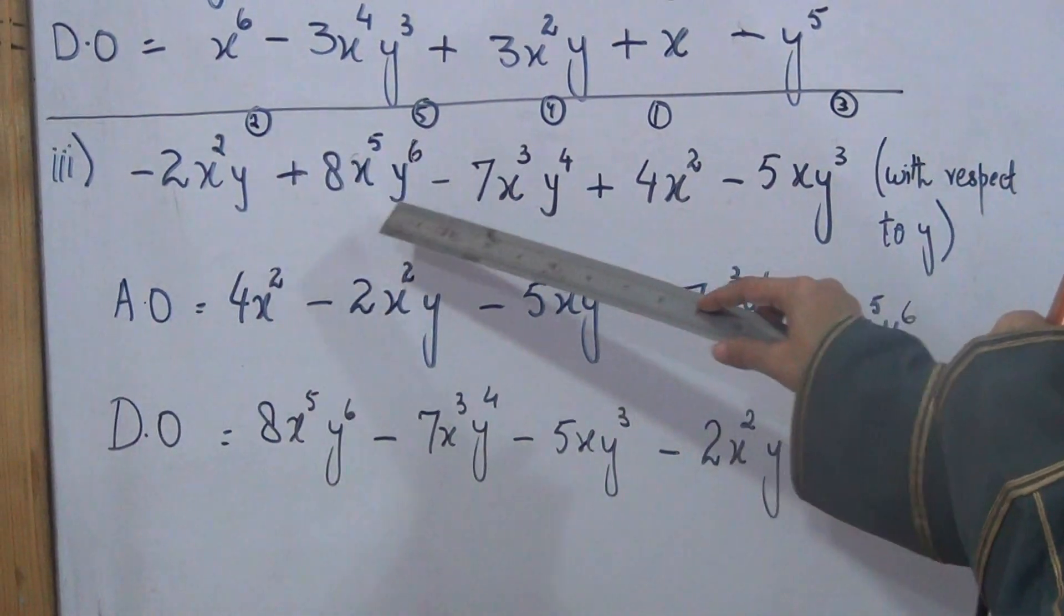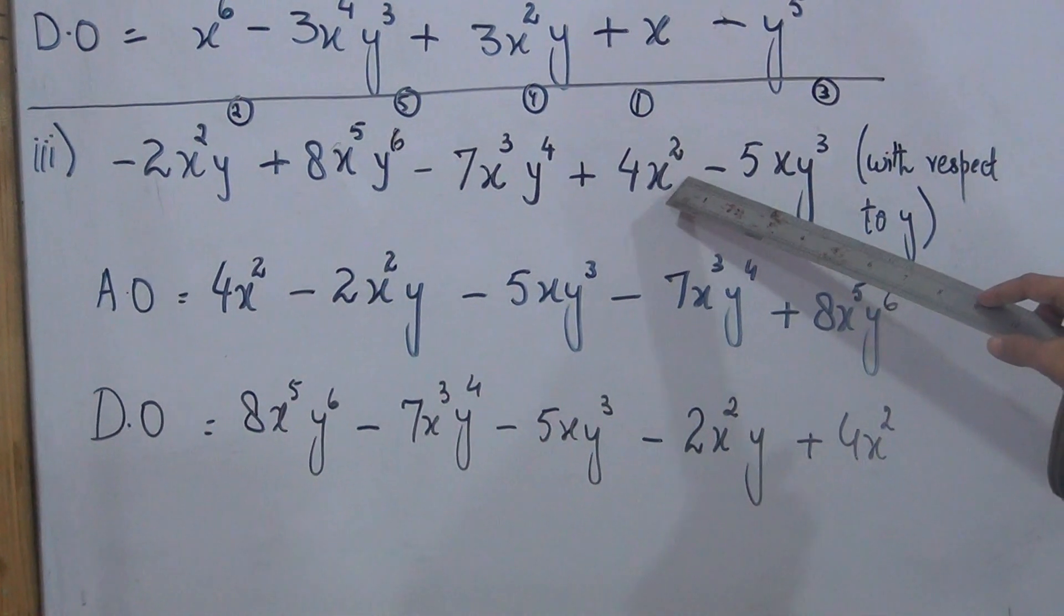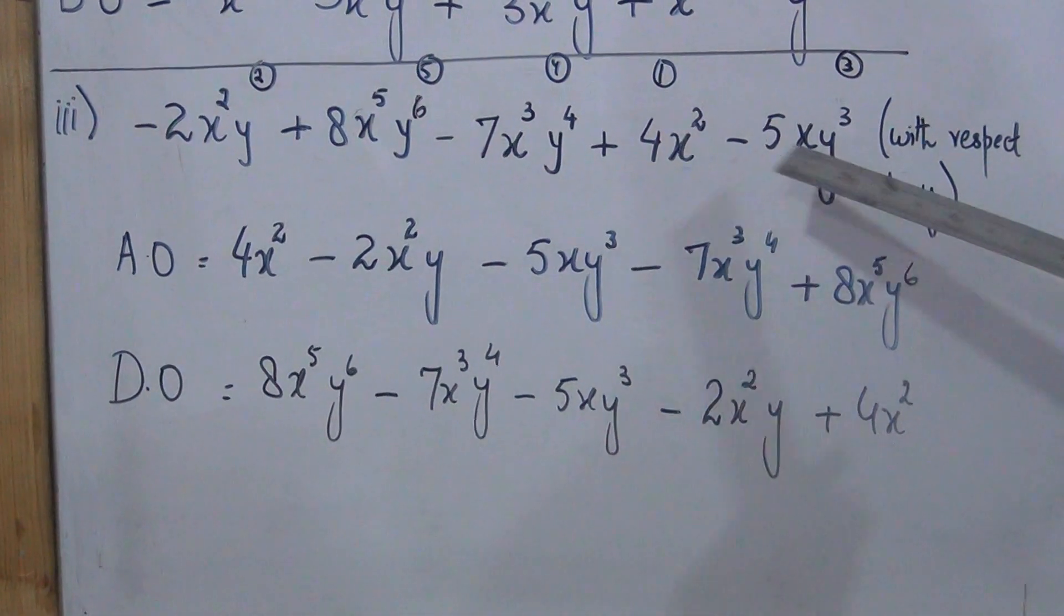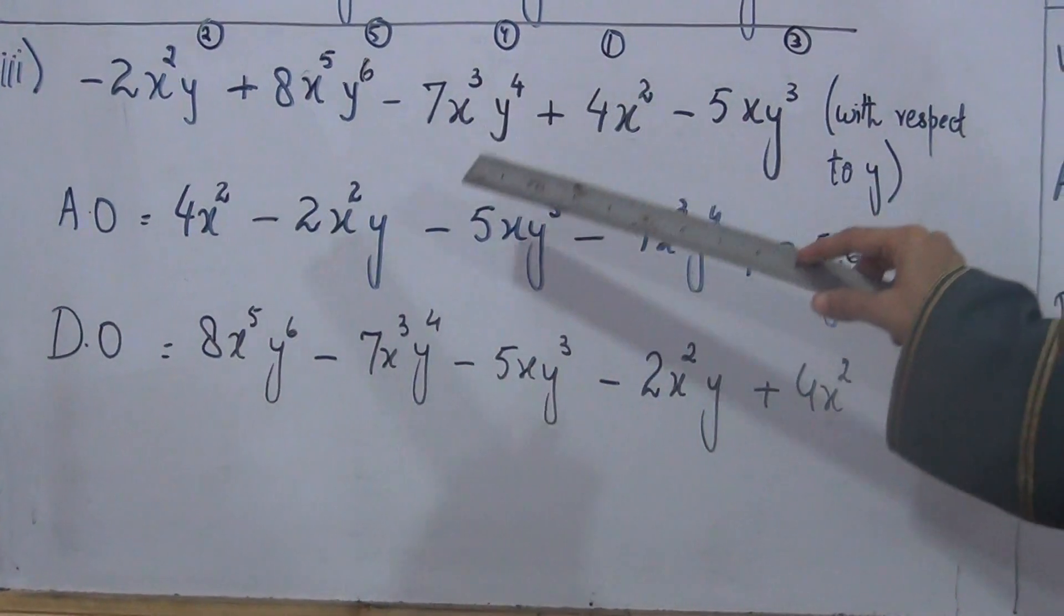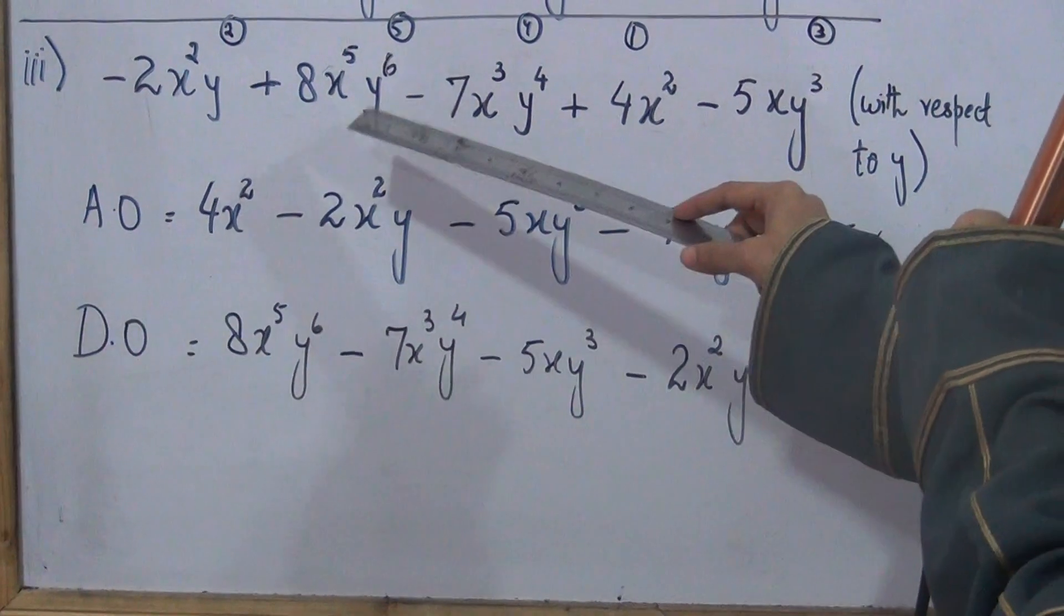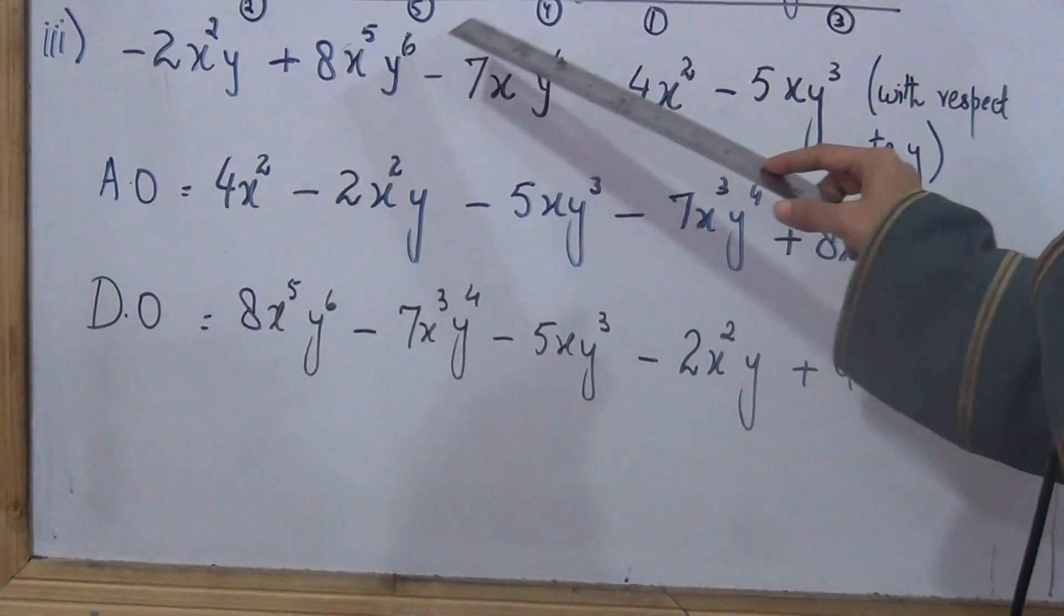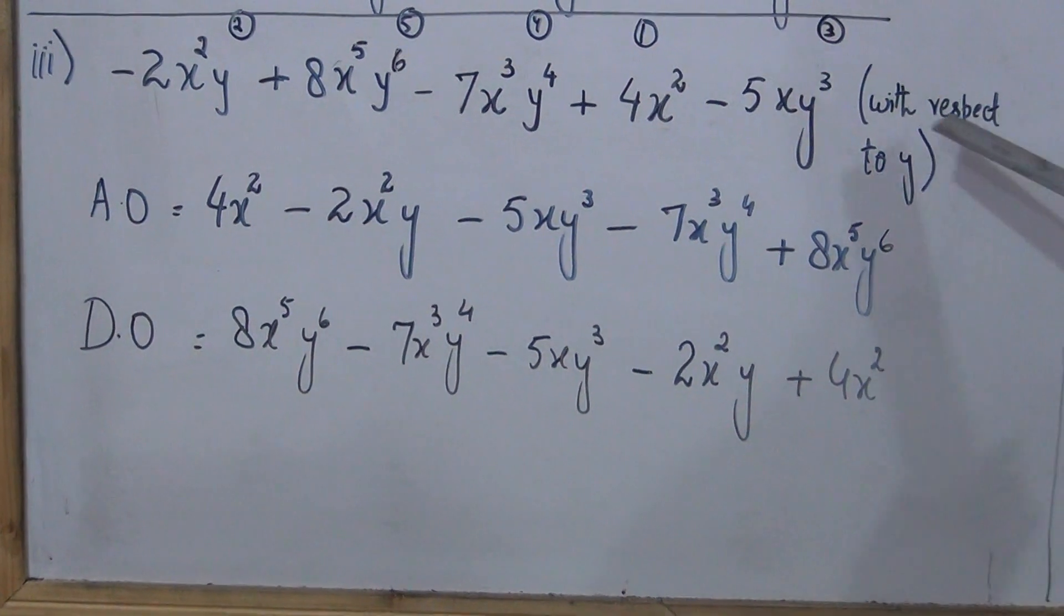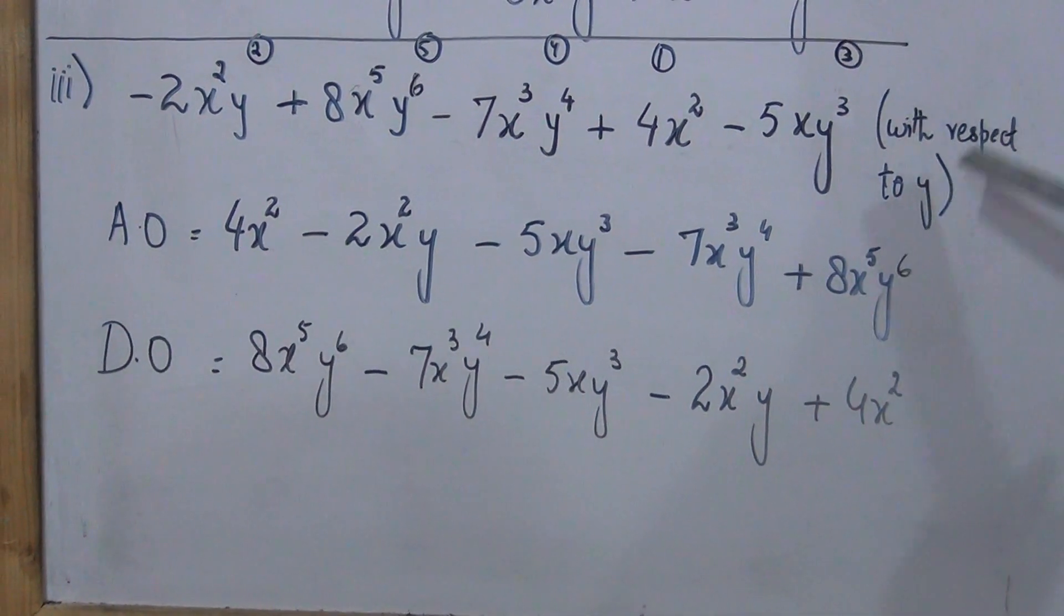Y power is one, y power is six, y power is four, y is not there so y power is zero, y power is three. This means y has no duplicate. X has duplicate - x square is here and x square is also here. When duplicate comes, we will arrange by y. Y power three, y power one, y power five, y power one.